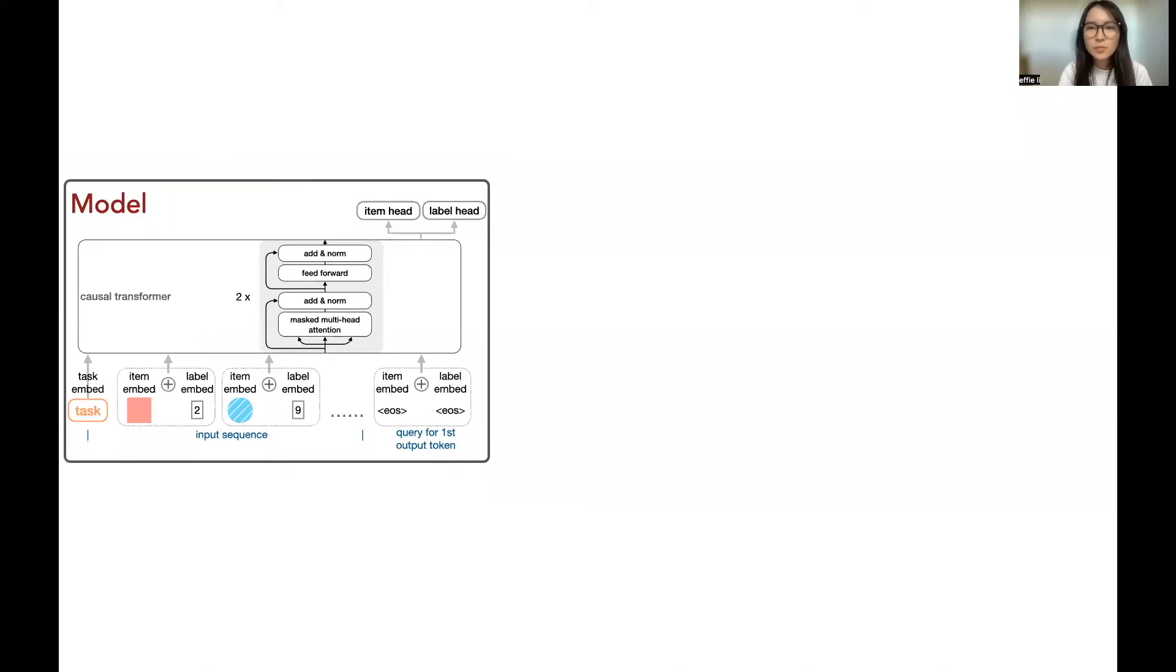We use a simple causal transformer. The input items are preceded by a task token and followed by the end of sequence token. These tokens are first embedded, where the items are embedded together with a set of labels. The embedded tokens are passed through future-masked attention layers, and the model then predicts both feature classes and the associated label for the items in the output sequence.